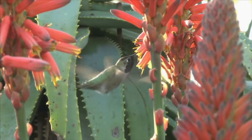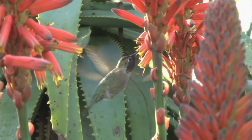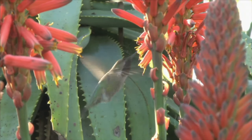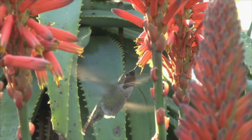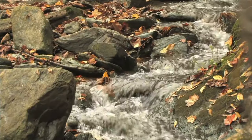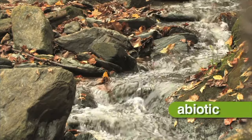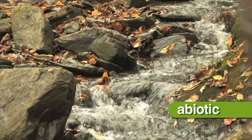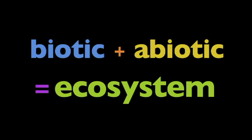Biotic factors — the living things in the environment — affect other living organisms and non-living things. Non-living factors, like rocks and water, are called abiotic factors. Biotic and abiotic factors combine to create an ecosystem.